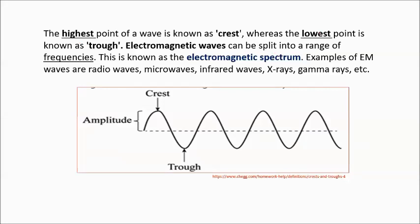Electromagnetic waves can be split into a range of frequencies — this is known as the electromagnetic spectrum. Examples of EM waves are radio waves, microwaves, infrared, x-rays, gamma rays, and others. The amplitude is the height from the crest to the trough. Many physicists wondered: can an electric field by itself produce a magnetic field? Maxwell hypothesized that it should indeed be possible. He proposed a modification of Ampere's Law in which a time-varying electric field produces a magnetic field.